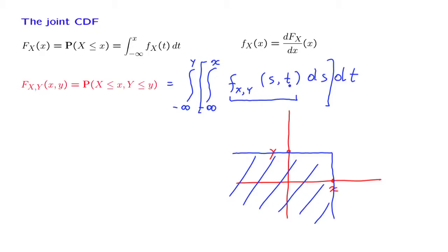And it will be the joint PDF evaluated at the particular limits of the integration. So it's going to be f sub xy at little x, little y. So we have this particular formula.